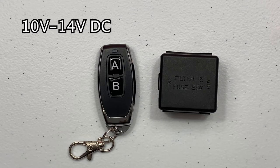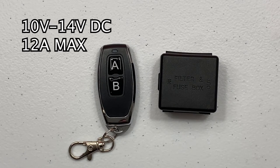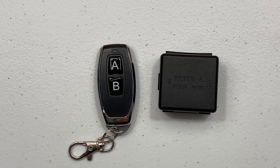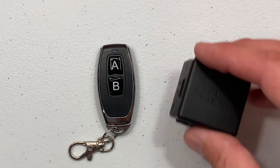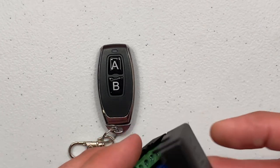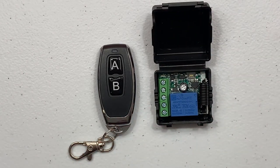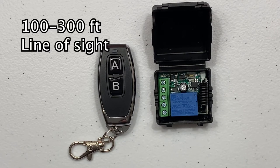The relay operates on 10 to 14 volts DC input and can switch up to 12 amps at 120 volts AC and has both normally open and normally closed output contacts. The relay is enclosed in a non-waterproof plastic box and has a wire antenna which can be routed outside for increased range. Range is 100 to 300 feet under line of sight operating conditions.